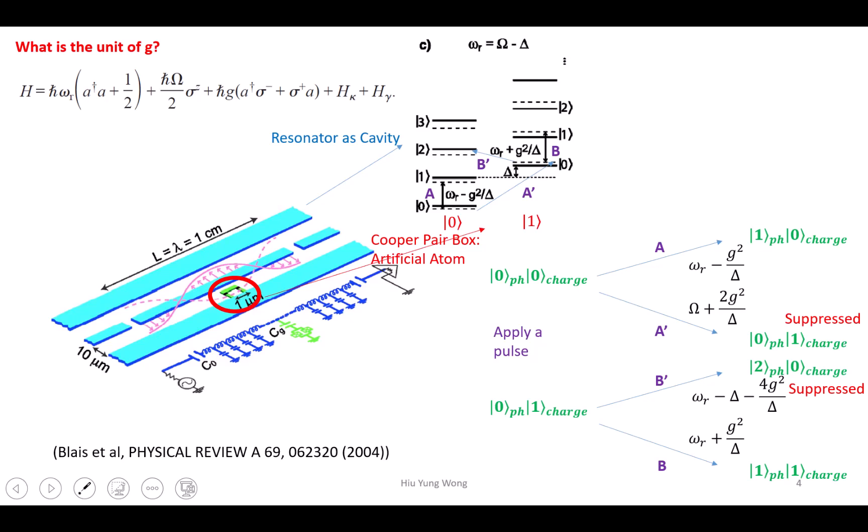Time to talk about quantum computing hardware. We use the superconducting qubit as an example. As I said, you don't need to worry about that part, you'll learn that later. But I do want to go back to a question you asked me last time: what is the unit of g? I was not able to answer and I feel shame about that, because I should be able to just do some simple dimensionality analysis.